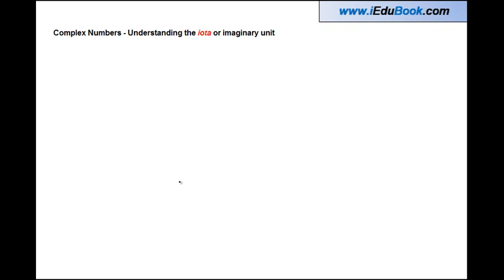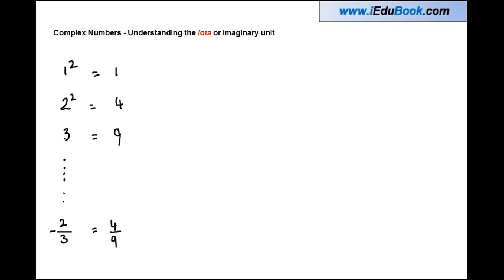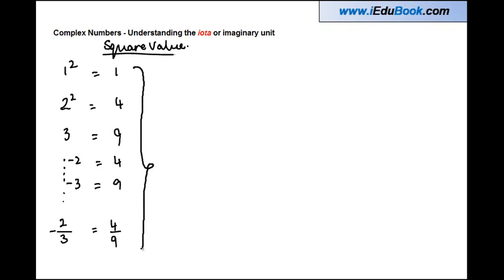Understanding complex numbers and the imaginary unit iota. You have been squaring numbers for quite a few classes. If you square one you get one, square two you get four, square three you get nine. If you square minus two-thirds you get four-ninths, and if you square minus two you still get four. So the square value of all numbers we have seen until this point were all positive.